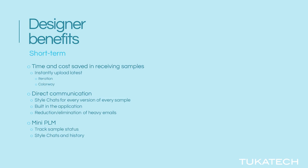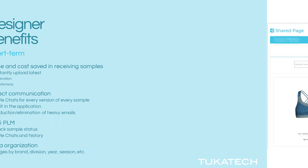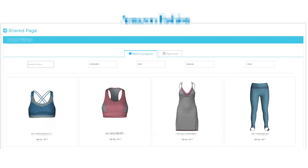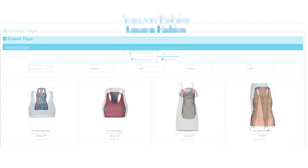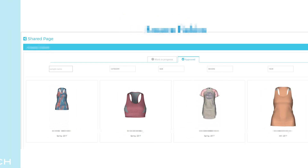Tuka Cloud is a mini-PLM system, which tracks each sample's status, style chat communication, and its development history. Tuka Cloud helps designers keep all their data organized, with pages and collections separated by brand, division, year, season, and more.